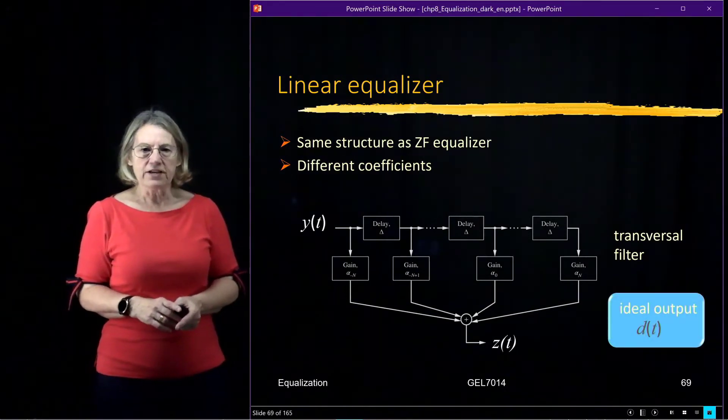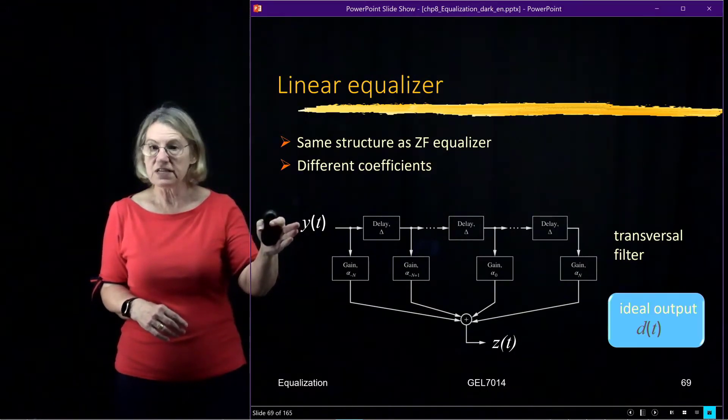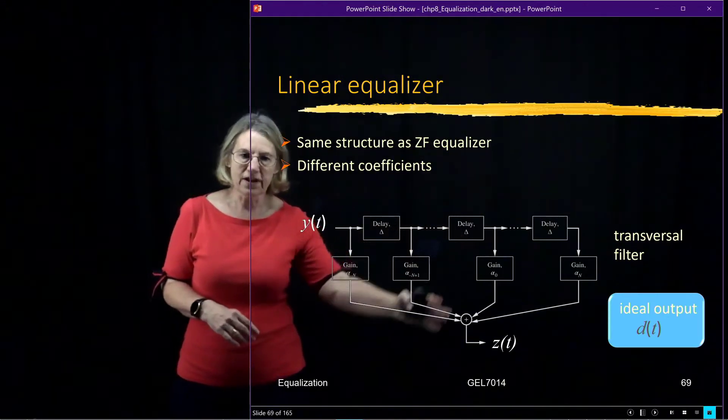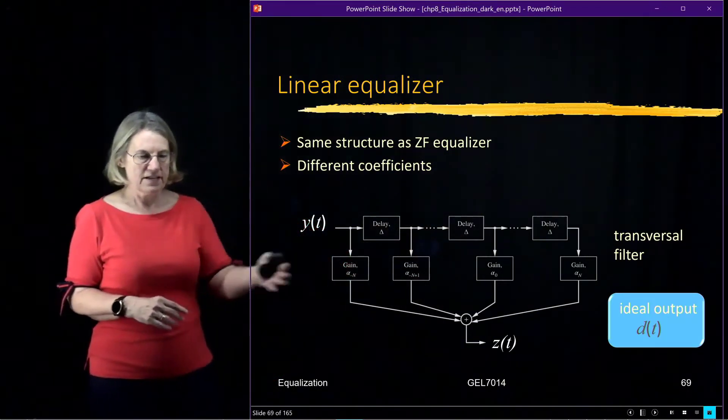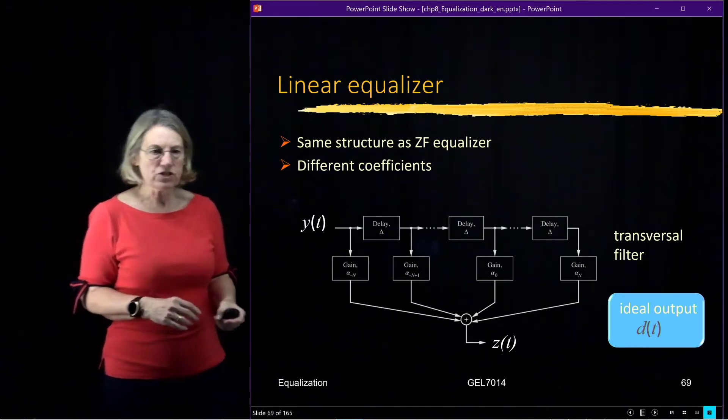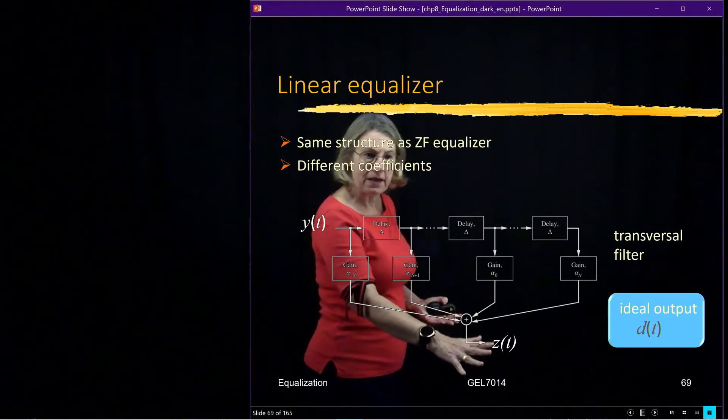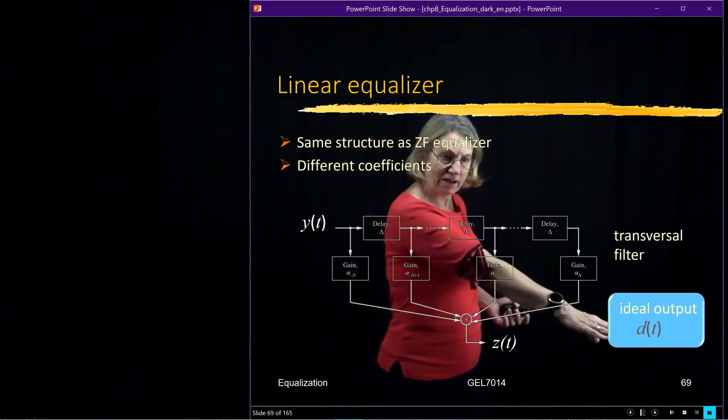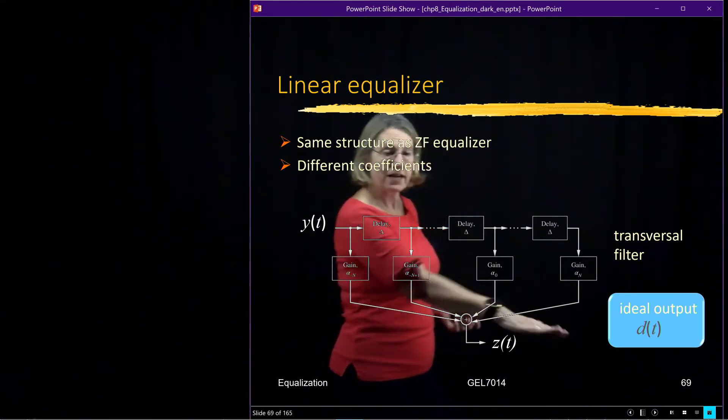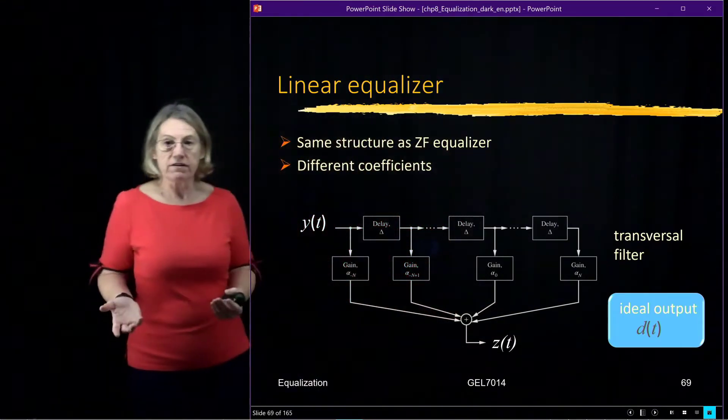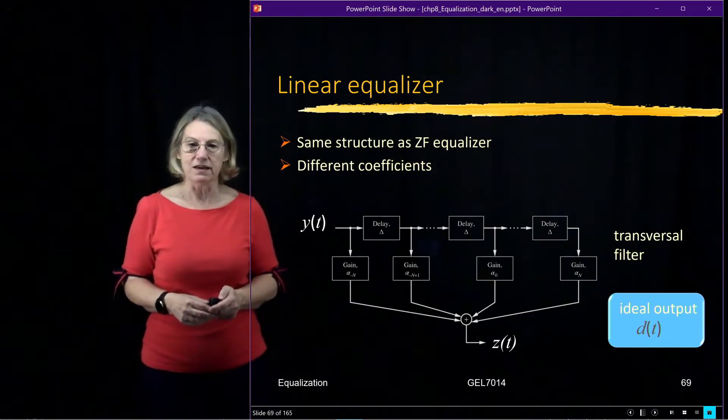So at the entrance to the equalizer, this is the received signal, and it goes through this filter, and the output of this filter is z(t) in this set of equations. And what we're trying to do is have this output of the equalizer be our data. So if we did perfect equalization, what came out of this equalizer would be the data. But of course there's some error involved, and that's what we're going to try to minimize with the MMSE equalizer.